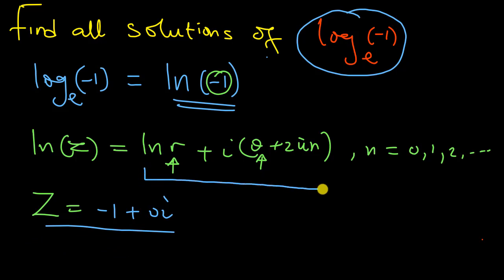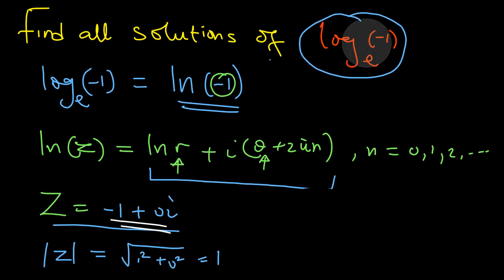So I want to find its logarithm. I'm going to use this formula to show you how I do that. Let's begin by finding the modulus of z. That's the square root of 1 squared plus 0 squared, which is obviously 1.